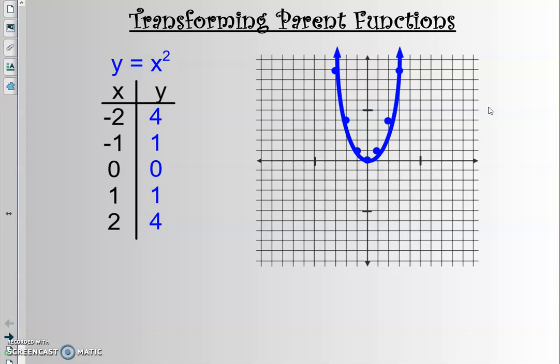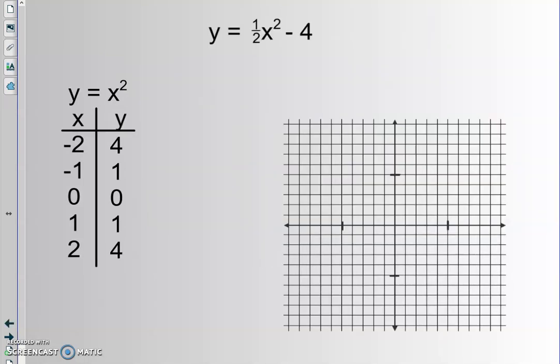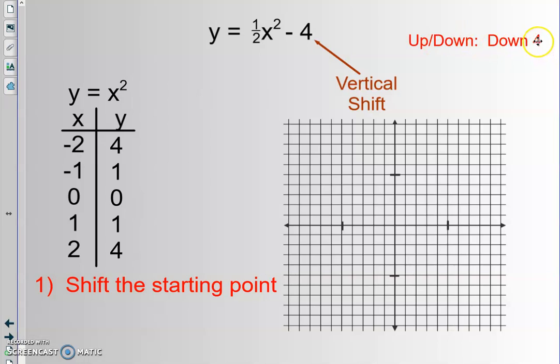That's great. But then all of a sudden, in Algebra 2, the game changed. So all of a sudden, in Algebra 2, now we have these numbers out in front. So maybe this is a half x squared and this is a minus four. And here's what I'm going to argue for. The first thing I think you should do when you're graphing a function that has been transformed somehow is I think you ought to shift the starting point.